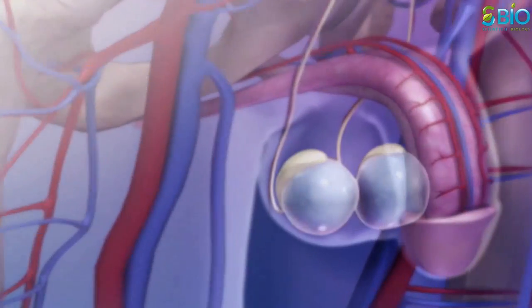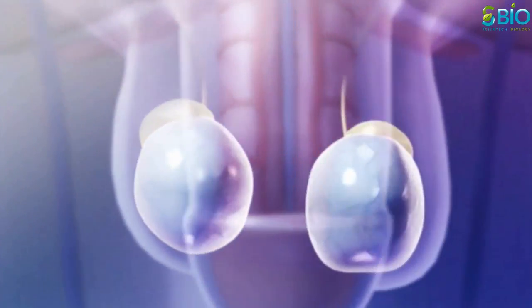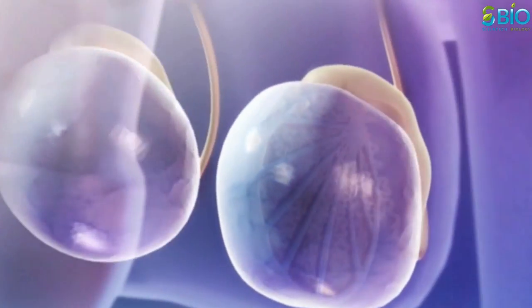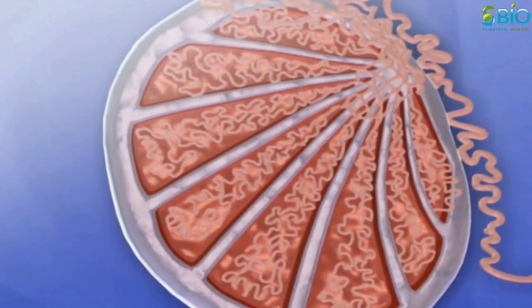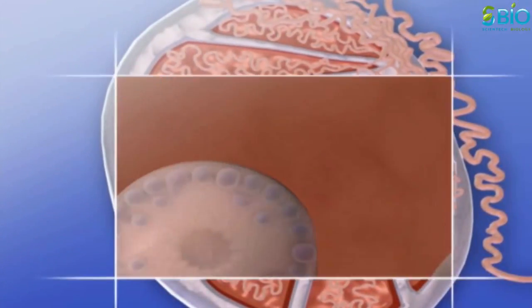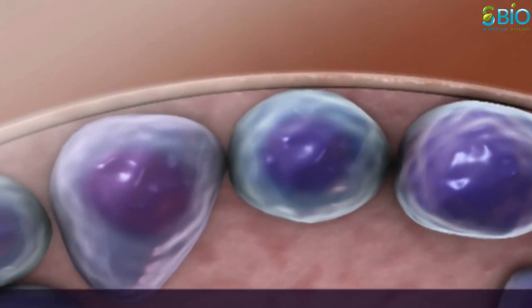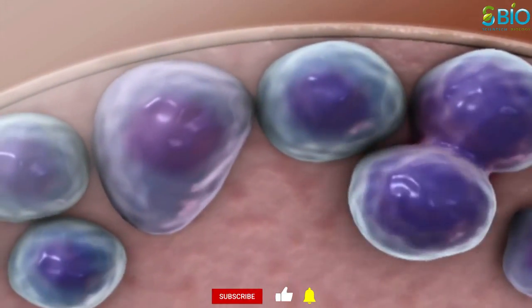The testis constantly produce sperms, the male sex cell. Production begins within the seminiferous tubules where stem cells called spermatogonia develop into immature sperm. Each 46 chromosome containing spermatogonia divides through mitosis and produces primary spermatocytes.